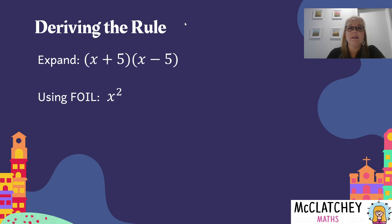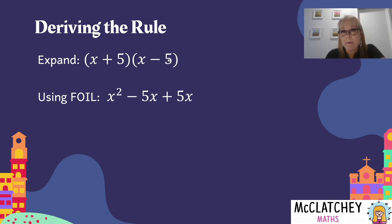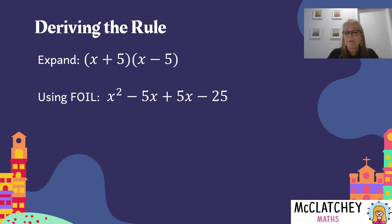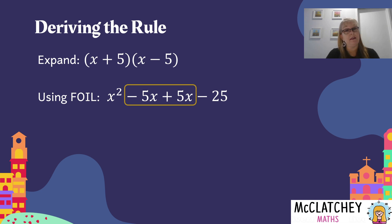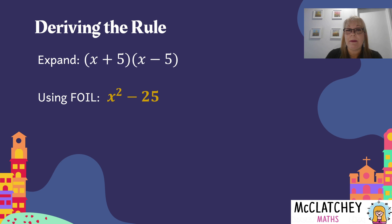O stands for outside, so the outside of each set of brackets means minus 5 times x, giving us negative 5x. I from FOIL stands for insides — the inside terms right in the middle — plus 5 times x makes positive 5x. And our last term: plus 5 multiplied by minus 5. Positive times a negative makes a negative, and 5 times 5 makes negative 25. Now let's simplify those two middle terms: negative 5x plus 5x makes 0. So those two middle terms disappear, and we've got simply x squared take away 25.